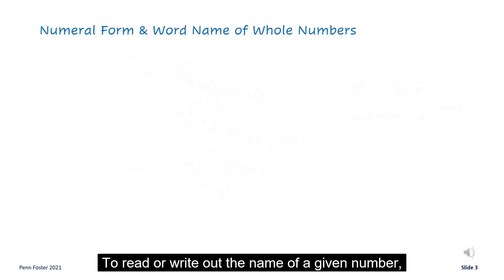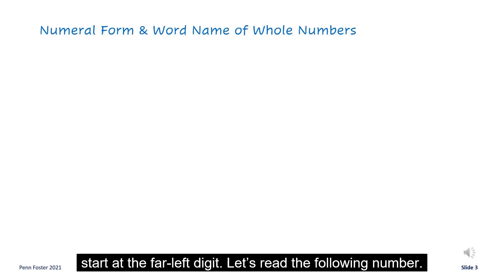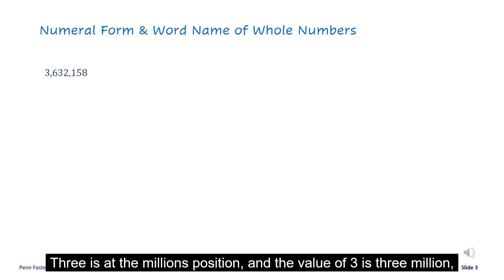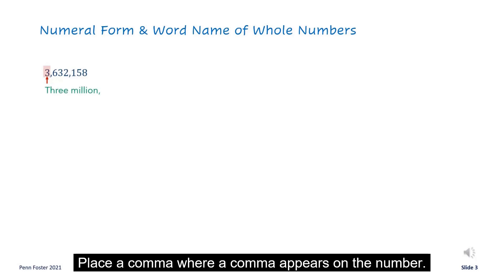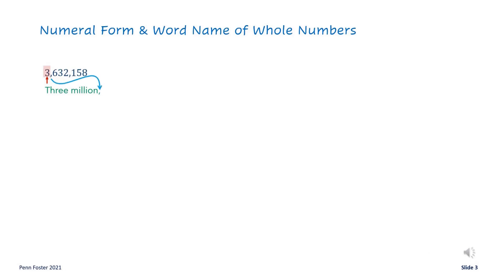To read or write out the name of a given number, start at the far left digit. Let's read the following number. 3 is at the millions position and the value of 3 is 3 million, so the first part of the name of this number starts with 3 million. Place a comma where a comma appears in the number.